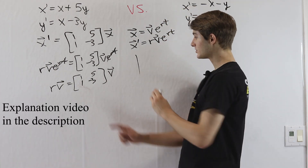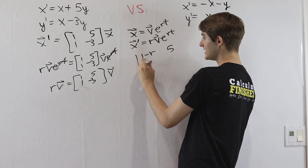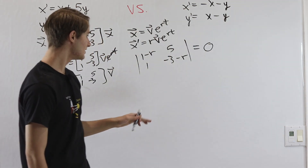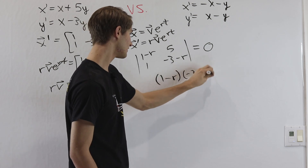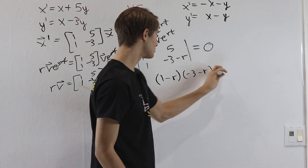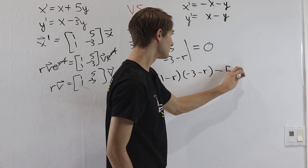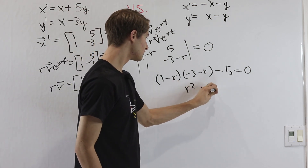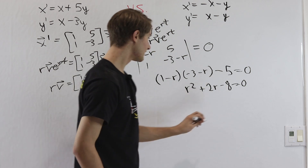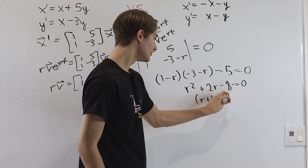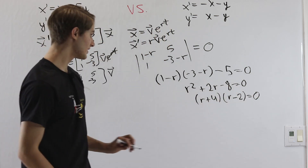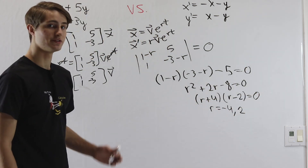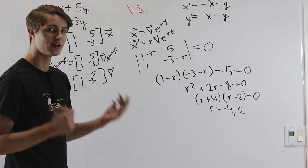This is where we find the eigenvalues and eigenvectors of our matrix. We set the determinant of the matrix minus r times the identity equal to 0. When we compute this determinant, we get 1 minus r times negative 3 minus r, minus 5 times 1, equals 0. Expanding, we get r squared plus 2r minus 8 equals 0. Factoring gives us r plus 4 times r minus 2 equals 0, so our eigenvalues are r equals negative 4 and r equals positive 2.